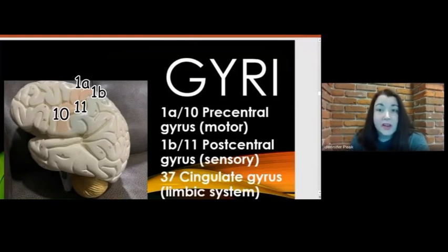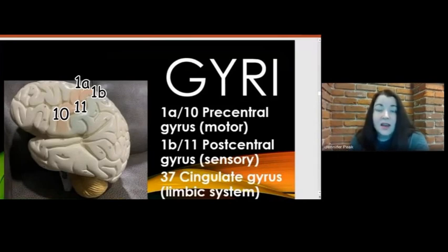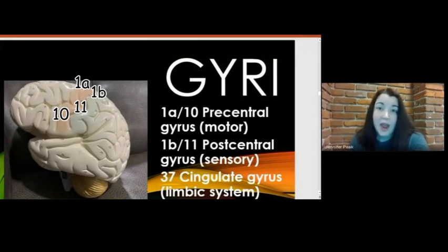Now let's discuss the gyri on the 3D brain model. The precentral gyrus is located before the central sulcus on the frontal lobe — it's the very back portion of the frontal lobe and deals with motor function. Behind the central sulcus is the postcentral gyrus, identified at 1b or 11. It is on the anterior portion of the parietal lobe. The inferior portion deals with taste, and the superior portion deals with kinesthetic senses and things your skin detects, like pain, temperature, pressure, and touch.